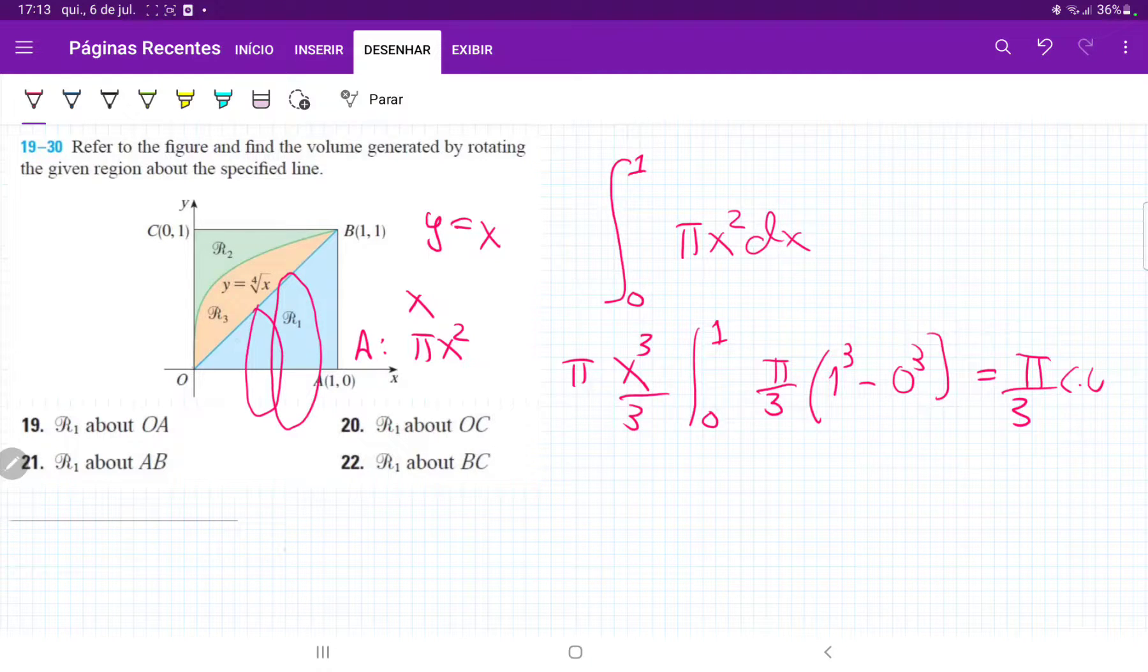And yeah, that is what we get when we revolve this line, right? That goes from R1. So we're taking the area beneath this curve and then we're revolving it about the line OA.